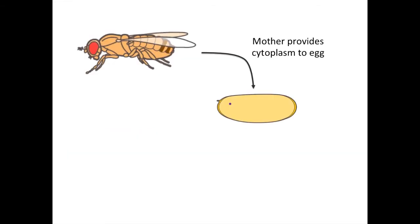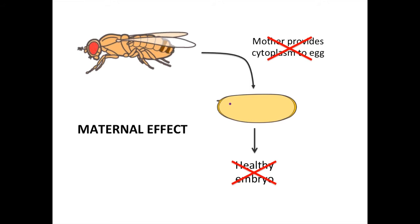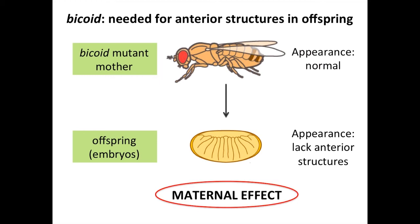Recall that the cytoplasm in the early embryo basically all comes from the mother. Nearly all the cytoplasmic components like ribosomes, metabolites, and macromolecules that are present in the newly formed embryo have been contributed by the mother in the cytoplasm of the egg. If the mother lacks any of these components and fails to provide them, her offspring will suffer the consequences and exhibit a corresponding phenotype. Because the genotype of the mother affects the phenotype of the offspring, mutations with phenotypes like this are known as maternal effect mutants.